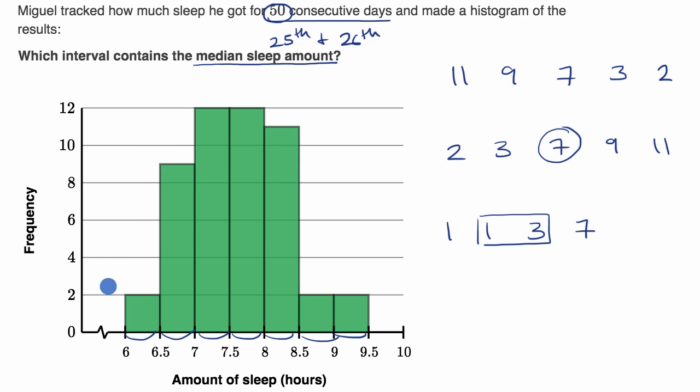Well, we can start at the bottom. So let's just look at each interval and think about how many data points they have in it. This one has two. This one has nine. This one has 12. And I'm just reading out how many data points there are in each of these intervals. This one has 12. This one has 11. This one has two. And this one has two.